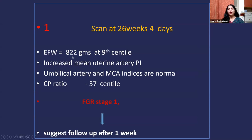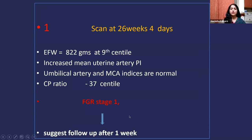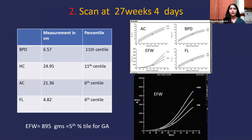At the end of the Doppler evaluation, I had two findings: estimated fetal weight less than 10th centile and increased mean uterine artery PI. By the Barcelona staging system, this was clearly fetal growth restriction Stage 1. According to the algorithm, I suggested a follow-up scan after one week.